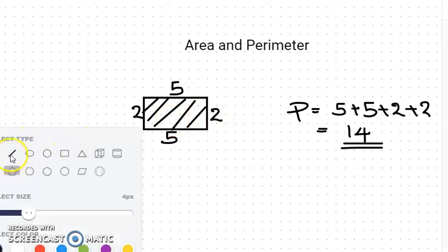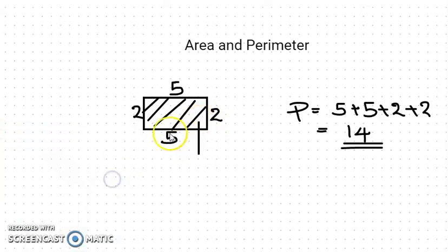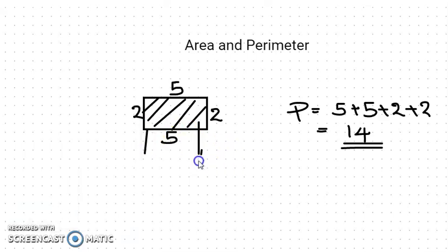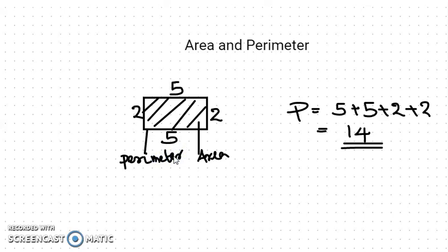We can mark it as: this inside portion is area, and this boundary is perimeter. We can write it as area because that is inside the boundary, and the boundary length is known as perimeter. So, area and perimeter are now clear.